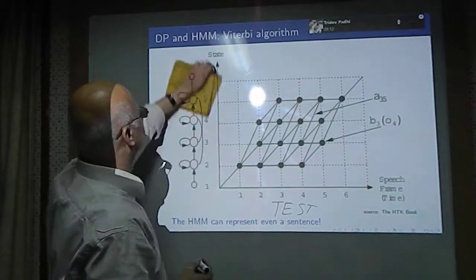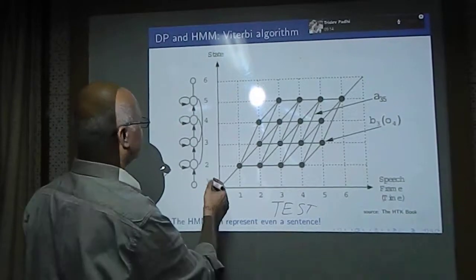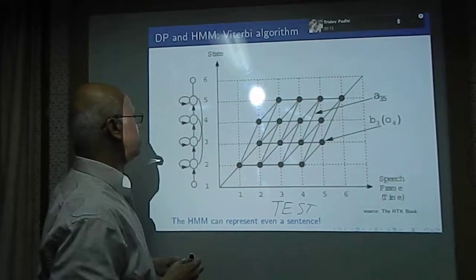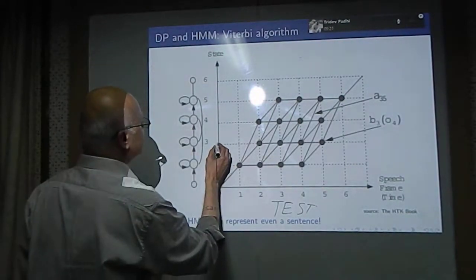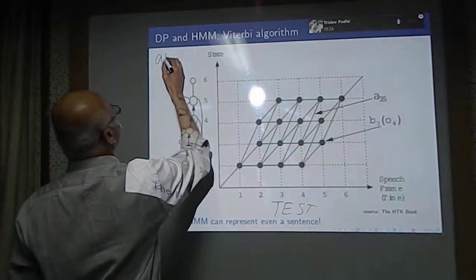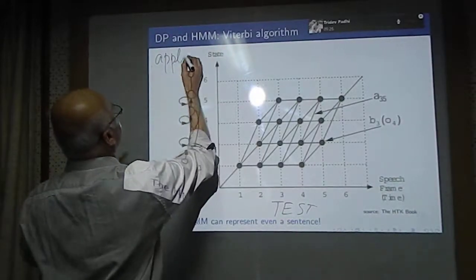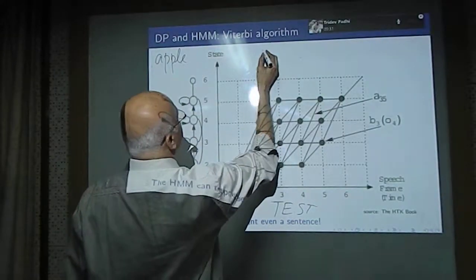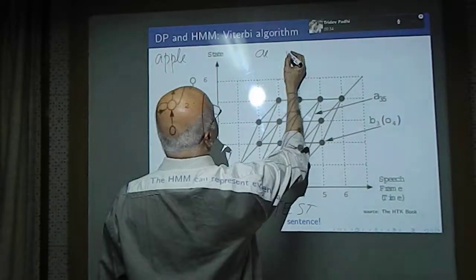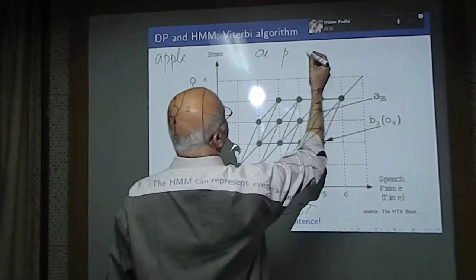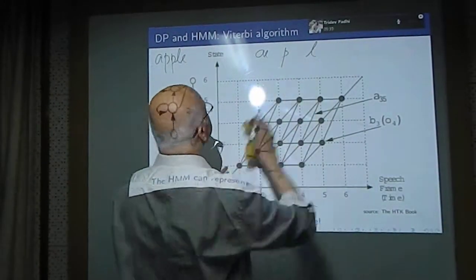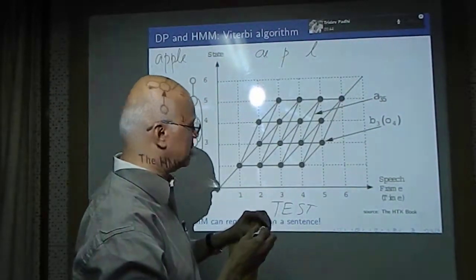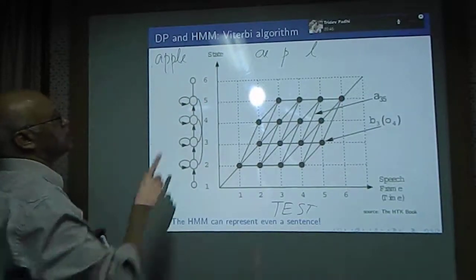This reference feature vector sequence, suppose you say the word apple, the sound A of the word apple. What are the phonemes? There is a phoneme A, then there is a phoneme P, and then there is a phoneme L. There are only three phonemes. Although it is written like this, there are three phonemes: apple.